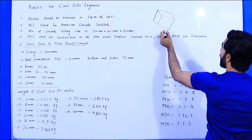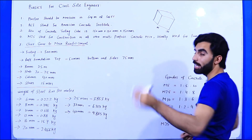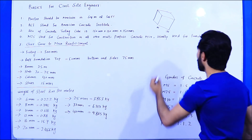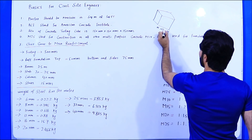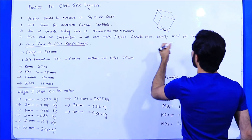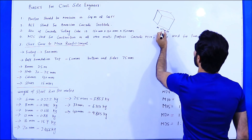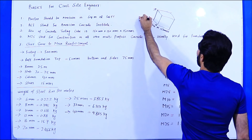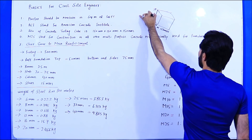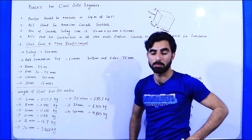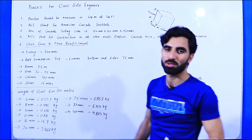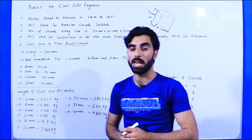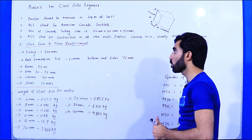The size of the concrete cube used for testing in a compression machine after 28 days — for M15, M20, and M10 grades — should be 150mm × 150mm × 150mm, or equivalently 15cm × 15cm × 15cm. This is the standard size; it should not be more or less than this fixed dimension. Remember this point.